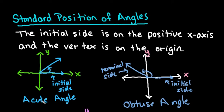If you have acute angles, they will start on the positive x-axis and then stop somewhere between 0 and 90 degrees, not including those values.